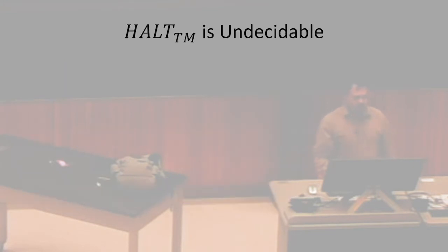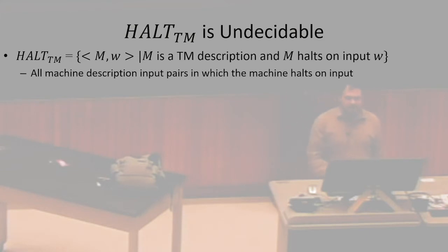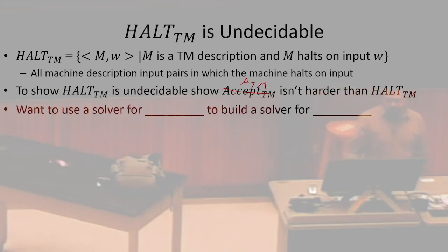To show that HALT is undecidable — not computable — using our reduction: HALT is every machine description and input pair for which that machine is going to halt on that input. To show that HALT is undecidable, we're going to show that ATM is no harder than HALT. We want to use a solver for one to build a solver for the other.